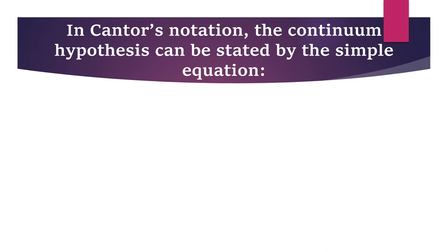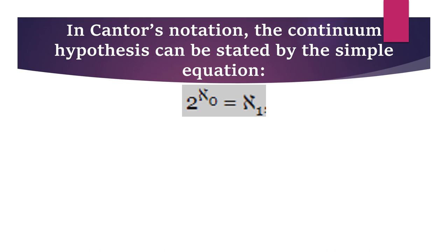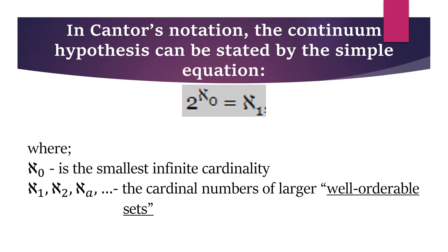In Cantor's notation, the Continuum Hypothesis can be stated by the simple equation: 2 raised to Aleph Null is equal to Aleph 1. Where this symbol is from a Hebrew letter called Aleph. Aleph sub 0, read as Aleph Null, is the smallest infinite cardinality — the cardinality of natural numbers. And Aleph 1, Aleph 2, Aleph A are the cardinal numbers of larger well-orderable sets, with Aleph 1 being the next smallest infinite cardinality, and so on.